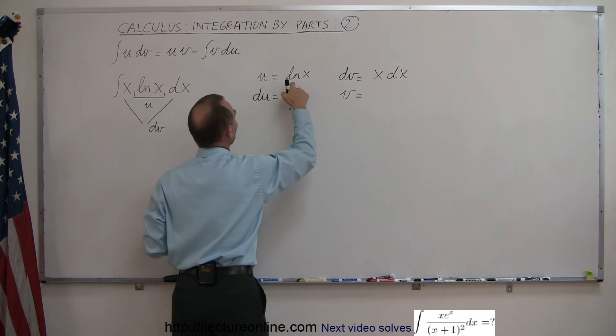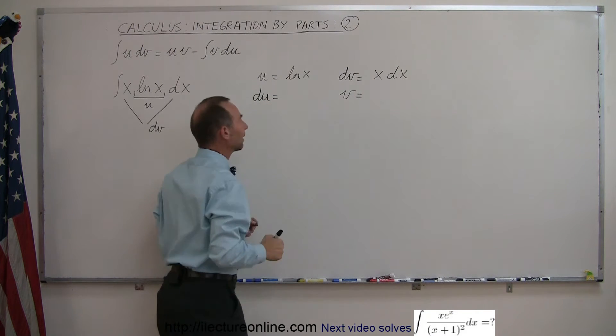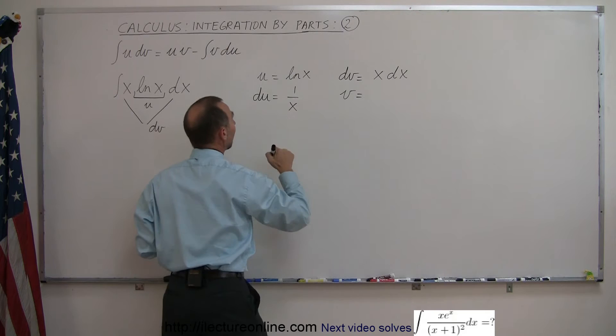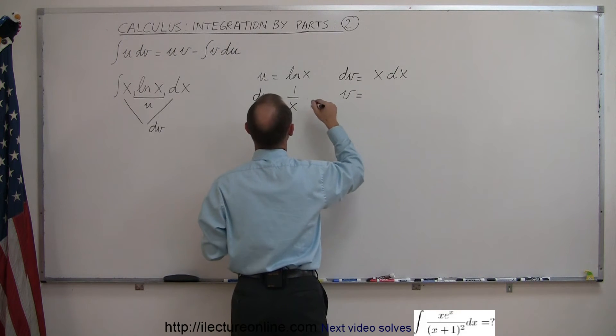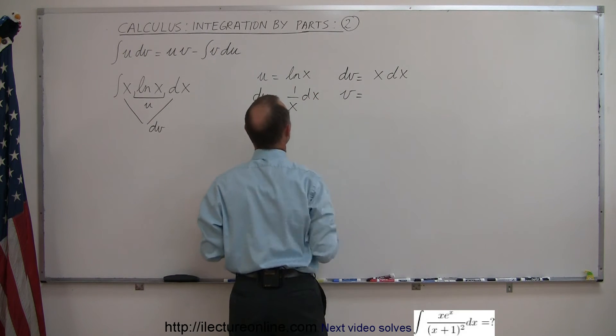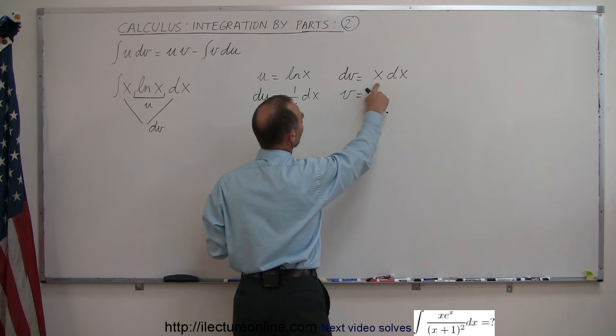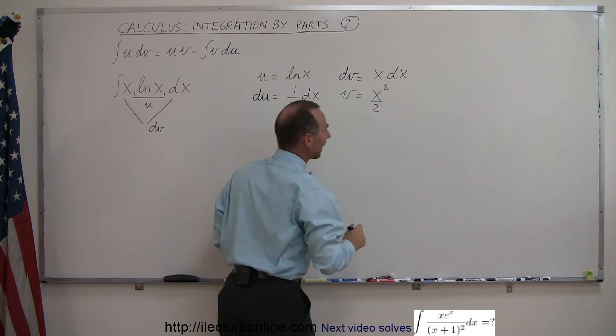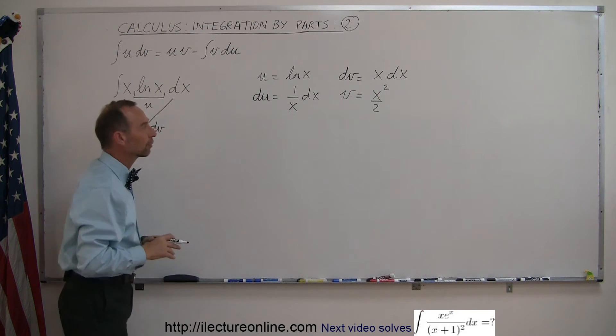The natural log of x, if we take the differential of that, is 1 over x dx. And then if we integrate x, we get x squared over 2, and we leave off the constant of integration.